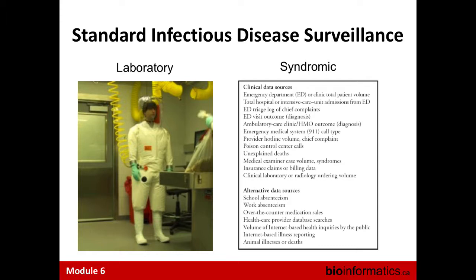When we are performing infectious disease surveillance, there are essentially two arms: the lab arm and the epi arm. The epi surveillance is also referred to as syndromic surveillance, where you are monitoring for patients who are exhibiting certain characteristic symptoms of illness.